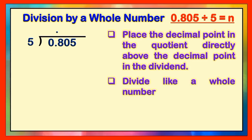The next step is to divide like a whole number. So let us divide 0 from the dividend by 5 — we will get 0 as the answer. Then we will multiply: 0 times 5, we will get 0. Get the difference, we will get 0. The next thing is to bring down the digit 8. 8 divided by 5 equals 1. 1 times 5 gives us 5. Then get the difference between 8 and 5, and the difference is 3.